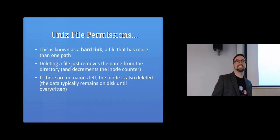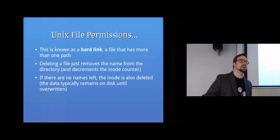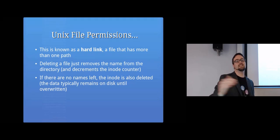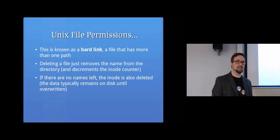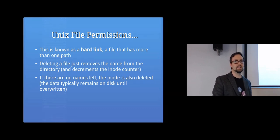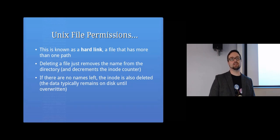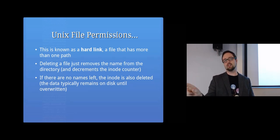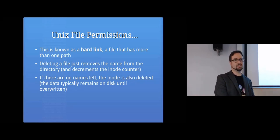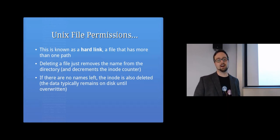A hard link is a file that has more than one path. A symbolic link is a weaker connection — it's a file that just points at another file, as opposed to multiple names pointing at the same inode. The key difference is you can't have a hard link to a file on a different file system. For example, if you have two USB devices, you can't hard-link across them, but you can have a symbolic link pointing to something on a separate USB device.